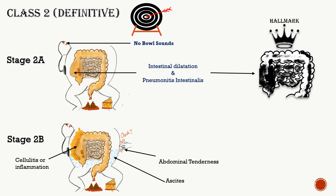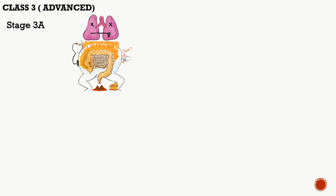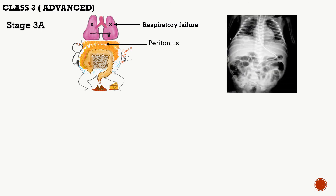Along with these signs, radiology in stage 2b will find gas in the portal vein. Moving to class 3, which is 'advanced': stage 3a contains all the features of stage 2b along with respiratory failure and peritonitis. This indicates the disease is progressing into a severe condition and hence immediate attention is needed.